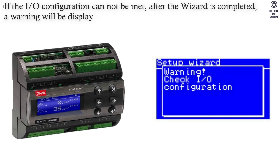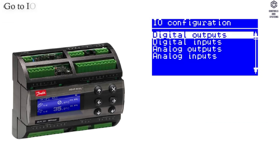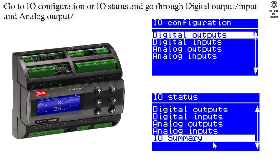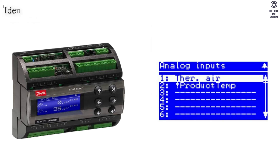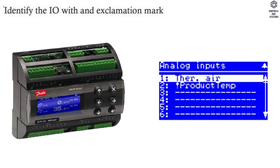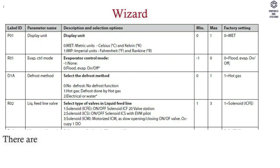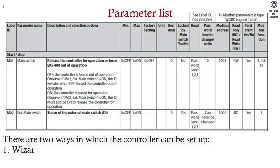A warning will be displayed. Go to I/O configuration or I/O status and go through digital output, input, and analog output input. Identify the I/O with an exclamation mark and reconfigure it. Setup overview: there are 2 ways in which the controller can be set up — the wizard or the parameter list.